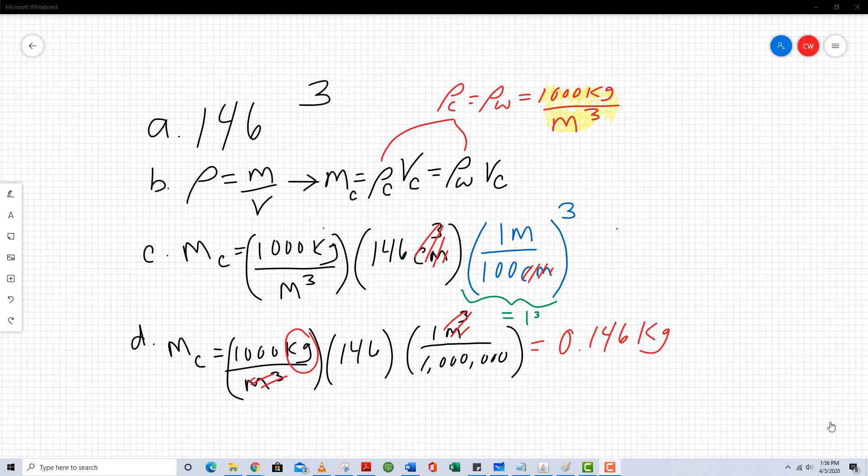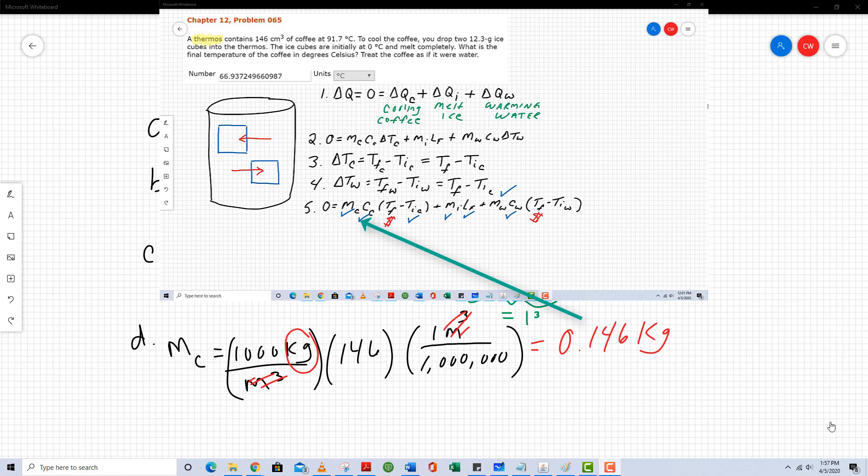So step four shows me that 146 cubic centimeters of coffee has a mass of 0.146 kilograms.